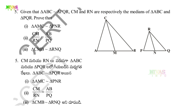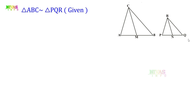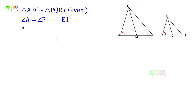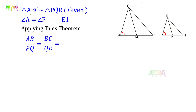Triangle ABC is similar to triangle PQR — these two triangles are similar. Because I have angle A equal to angle P as a common corresponding angle. This is Equation 1. Applying the basic proportionality theorem to similar triangles: AB/PQ = BC/QR = AC/PR. This is Equation 2.